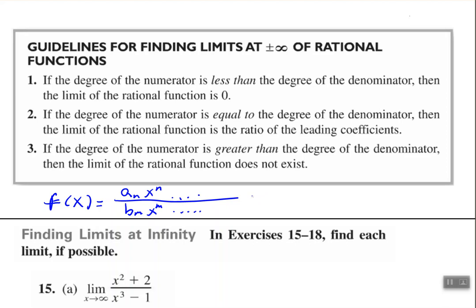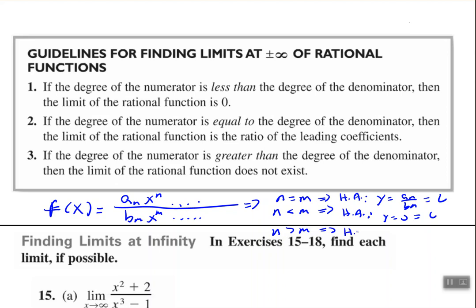So if we have this function here, if the degree of the numerator is equal to the degree of the denominator, then we found our horizontal asymptote to be y equal to a sub n over b sub n — the ratio of the leading coefficients — and that is the limit as well. If n is less than m, then our horizontal asymptote is at 0, and that's the limit as well. And if n is greater than m, then the limit approaches positive or negative infinity.